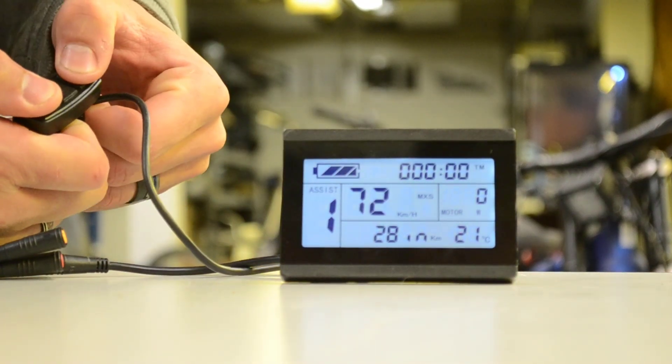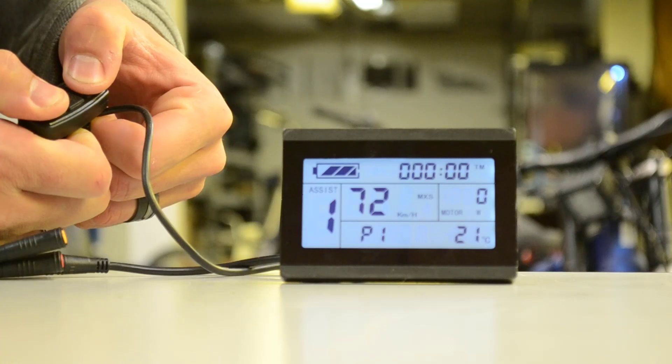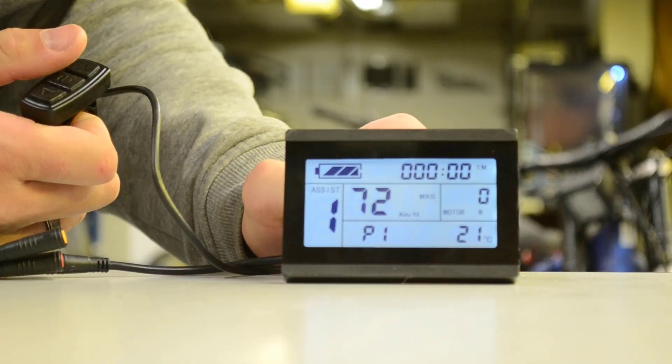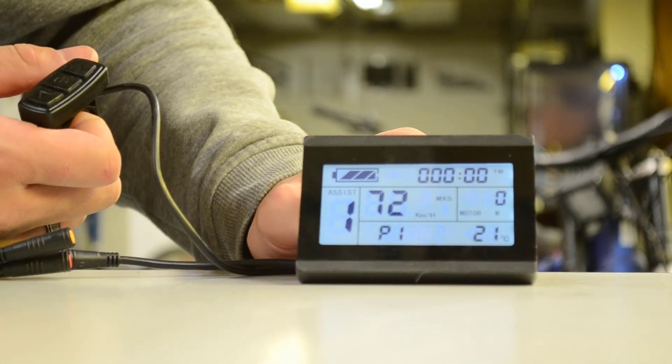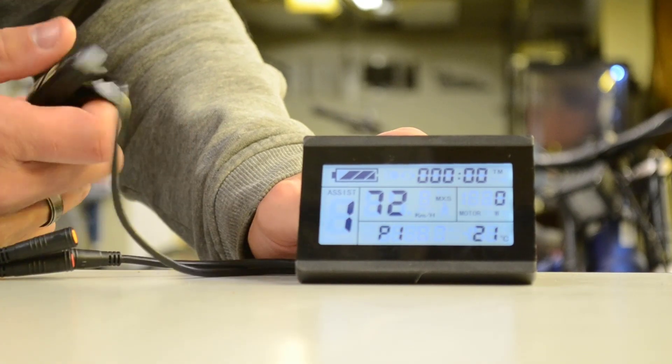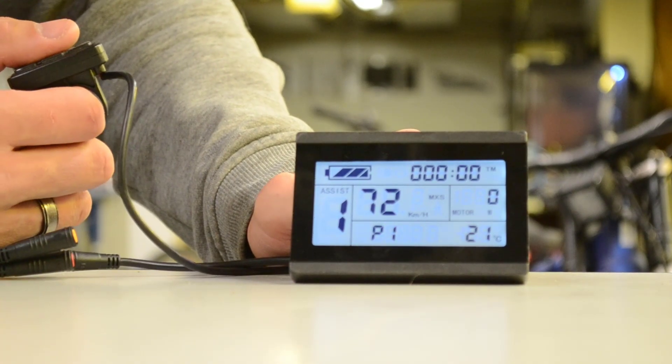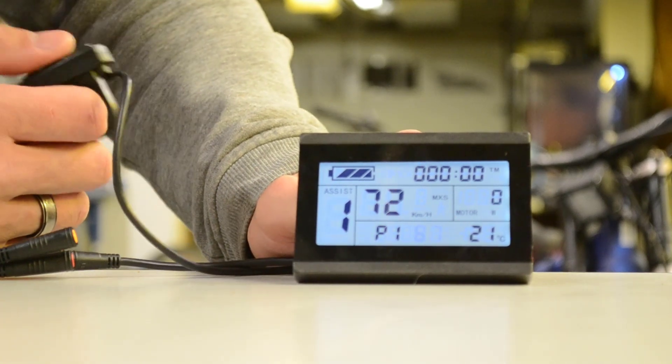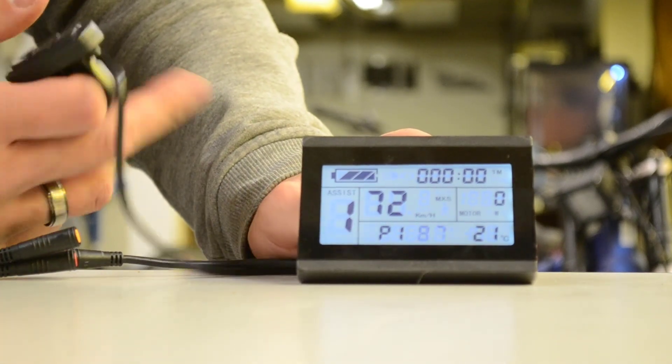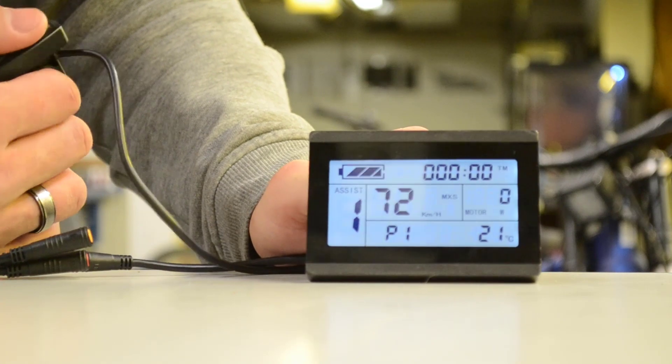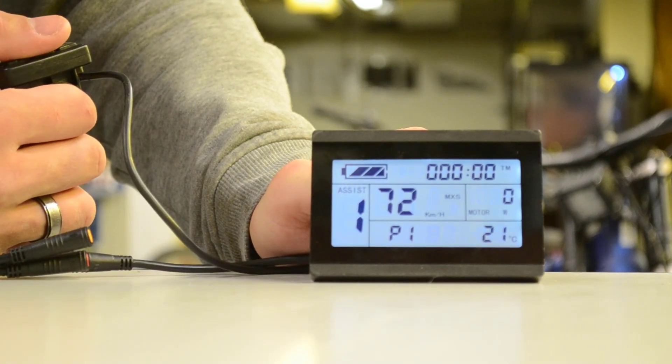So, now you press and hold up and down again. And it's going to enter us into our P settings. So, P1 and P2 are for how the speed reads on the motor. So, P1 stock setting is 87. This is a common setting for geared motors.